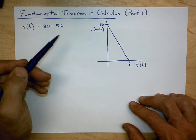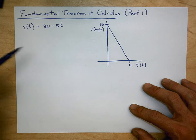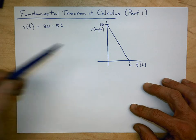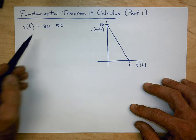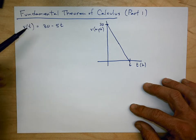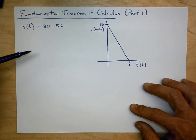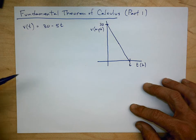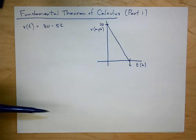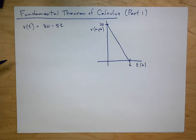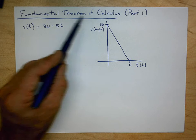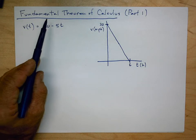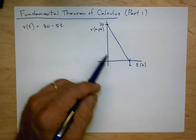One is area under the curve, and the other is antiderivative. So there's a relationship between integration and differentiation. Historically, differential calculus — looking at instantaneous rate of change, the derivative at a point — was developed separately from the problem of finding the area under the curve. This theorem connects the two and helps us understand the relationship between those two problems.